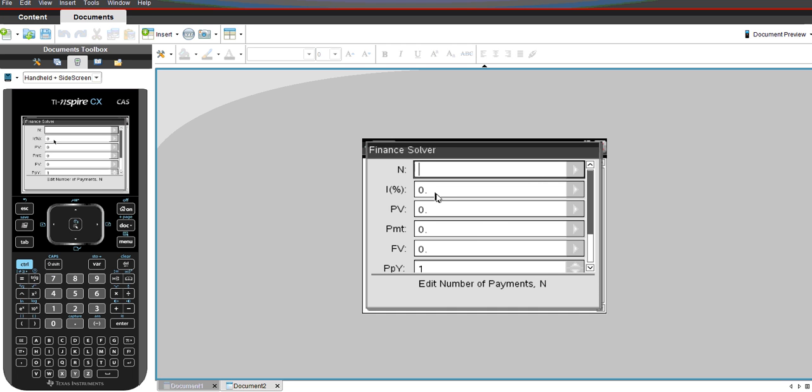So, in this particular example, we have 52 as our number of payments. Because there's two years by 26 fortnightly payments, it comes out to 52. 13% per annum, remembering that the finance solver uses percentage per annum. The present value is $8,000. That was the amount of money loaned. And you can see that it's positive because the money or the cash flow is going from the institution to the borrower.